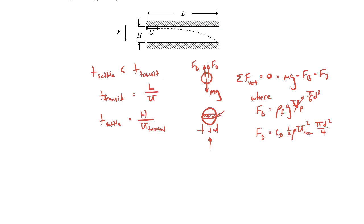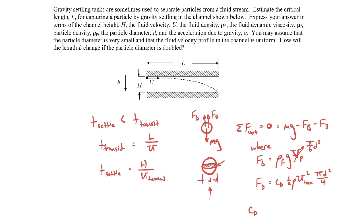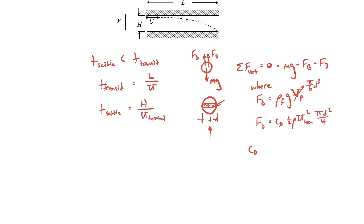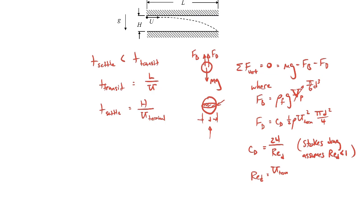For the drag coefficient, we assume the particles are small — the problem states the particle diameter is very small, which means the Reynolds number is likely very small, putting us in the Stokes flow regime. The drag coefficient in Stokes flow is 24 over the Reynolds number based on particle diameter. This assumes the Reynolds number is less than one, which we'll need to verify at the end. The Reynolds number is the terminal speed times the particle diameter divided by the kinematic viscosity of the fluid.